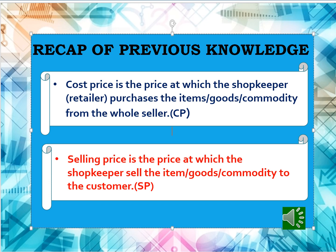Let's recall some of the definitions that we have learnt in our previous class. First, we are going to see about cost price. Cost price is the price at which the shopkeeper or the retailer purchases the items, goods or commodities from the wholesaler. And selling price is the price at which the shopkeeper sells the items, goods or commodities to the customer.